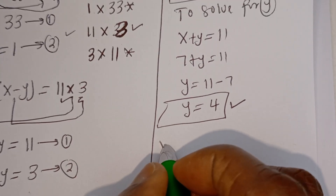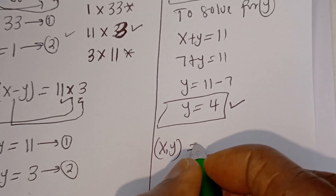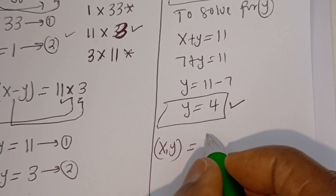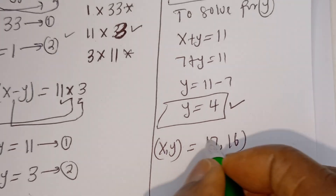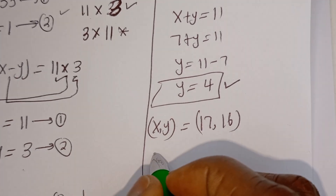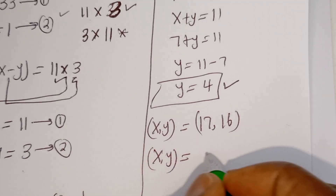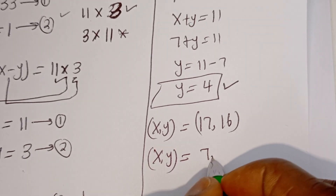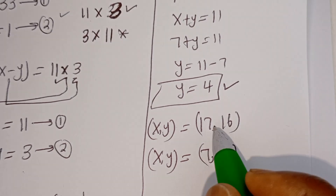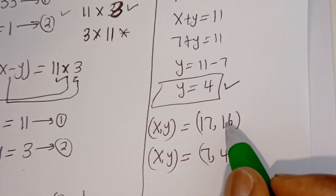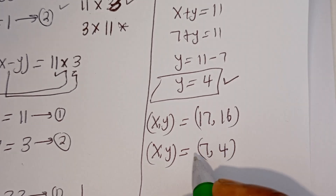Therefore our final answers are: from the first case, (X, Y) equals (17, 16); and from the second case, (X, Y) equals (7, 4). We can check to confirm — using either case, you are going to get the same result.